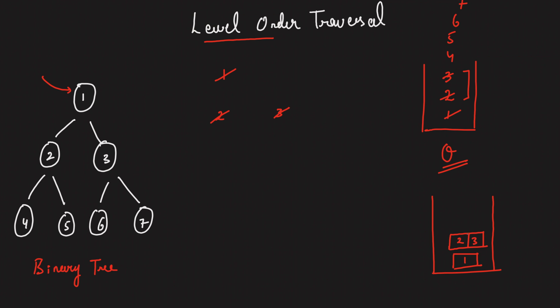Then the next iteration, you have these 4 elements. You'll take these guys out — 4, 5, 6, 7. Does 4 have a left? No. Does 4 have a right? No. Does 5 have a left? No. Does 5 have a right? No. Does 6 have a left? No. Similarly, no one has a left or a right. So if it doesn't have children, you don't need to push anything into the queue.